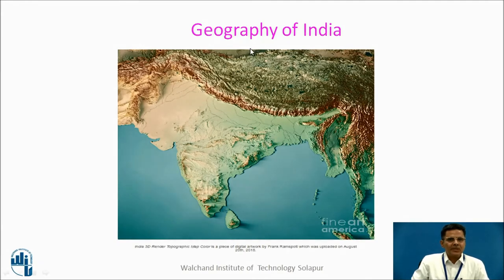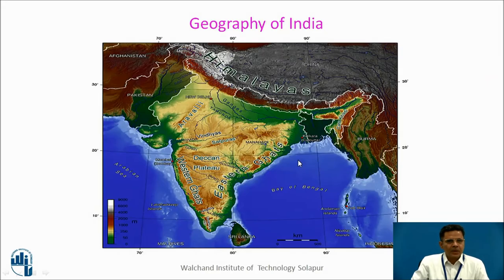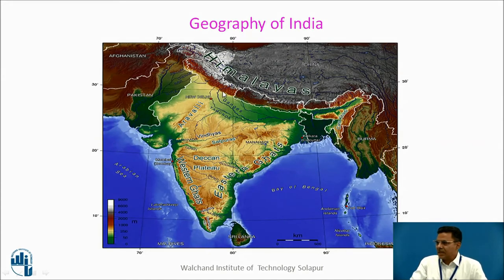This is another picture giving the idea of the geography of India, showing the Western Ghats, Eastern Ghats, and the Plains. India and its river basins: this is the Ganga river basin. These are the Vindhya mountains and the Satpura mountains. This is the Deccan plateau. Here we find the Western Ghats, the Tapti river, the Narmada river, the Krishna river, the Godavari river, and the Ganga basin.